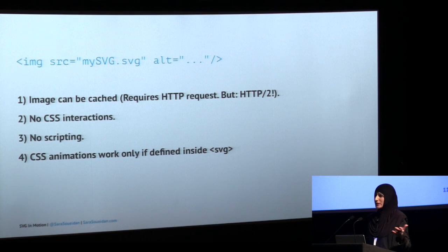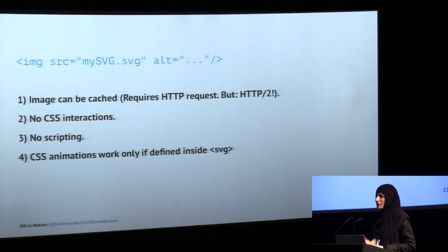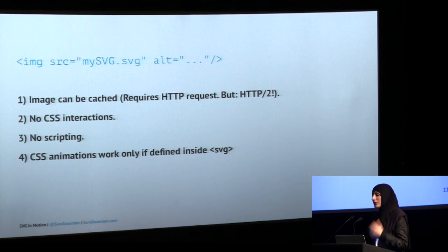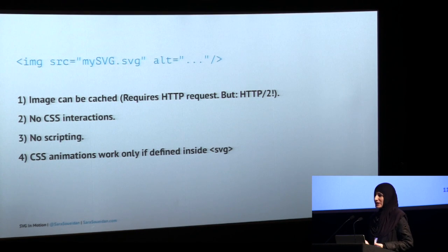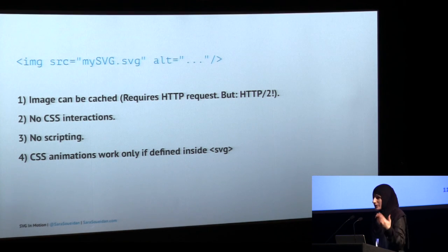The first way to embed an SVG is using an image tag, just like any other image format. The image can be cached; it does require an extra HTTP request, but with HTTP/2 that won't be a problem. There are no CSS interactions, no JavaScript interactions for security reasons, and CSS animations only work if they're defined inside the SVG. If you need JavaScript-based animation like shape morphing, you can't use the image tag.